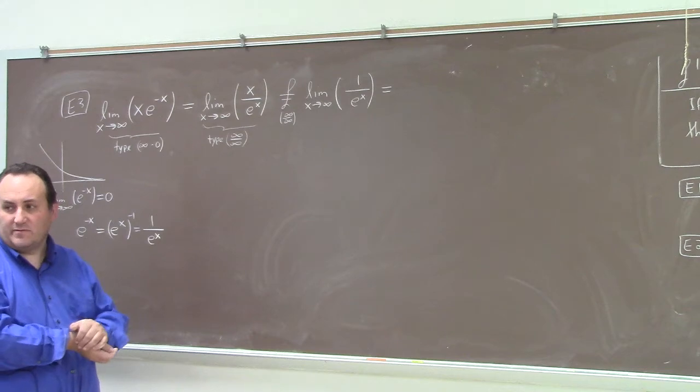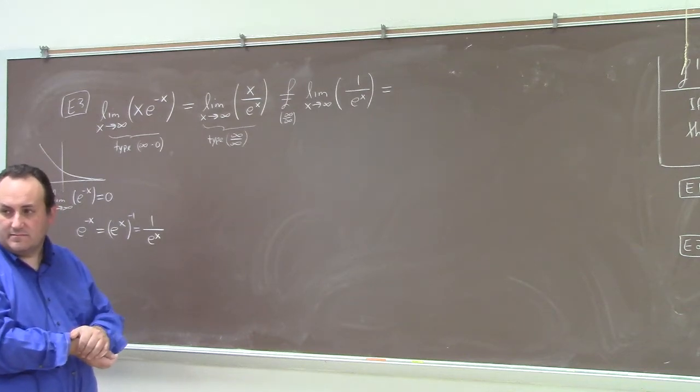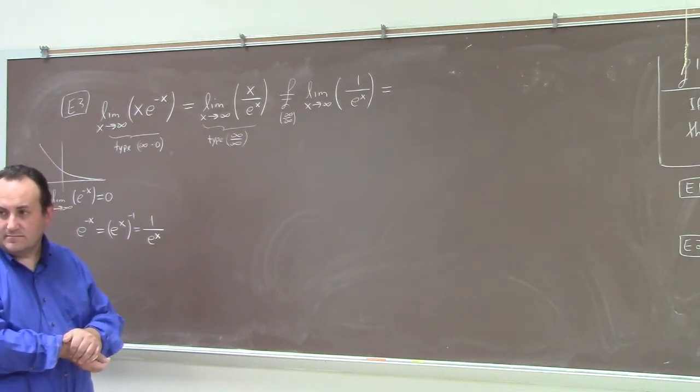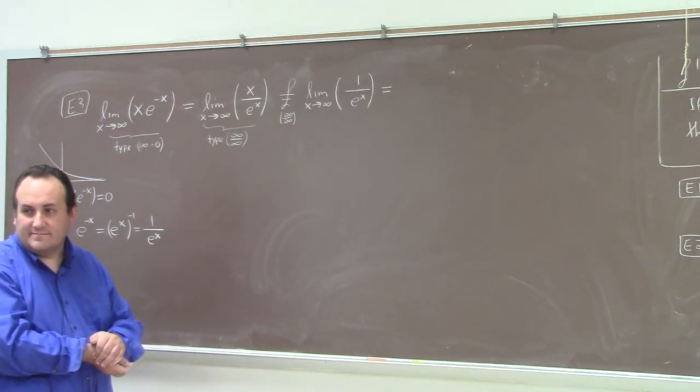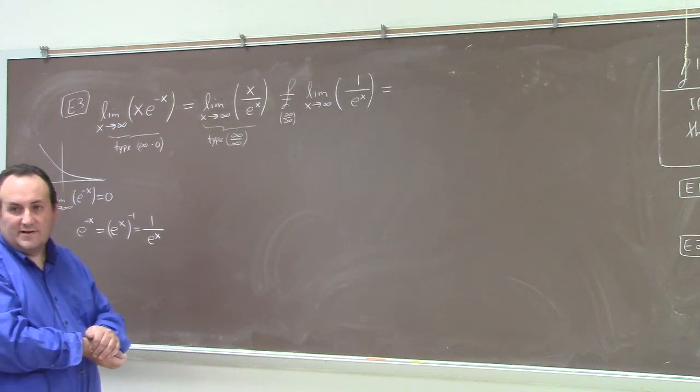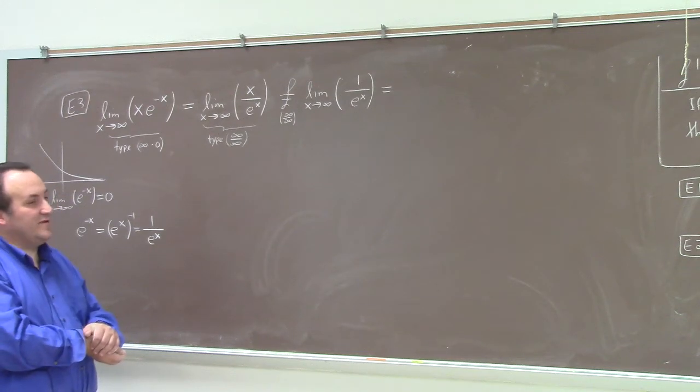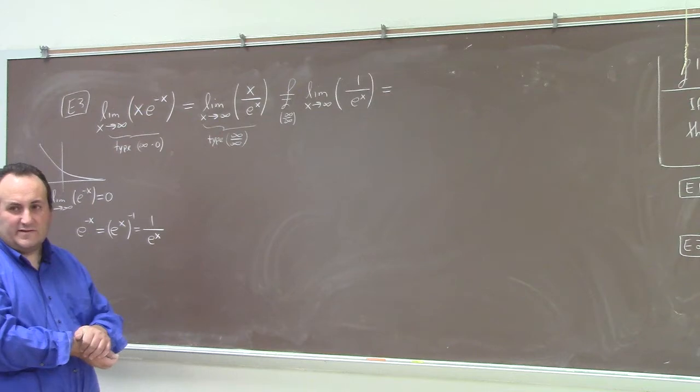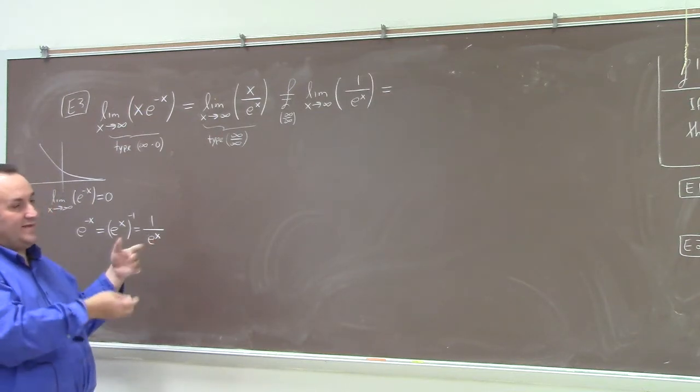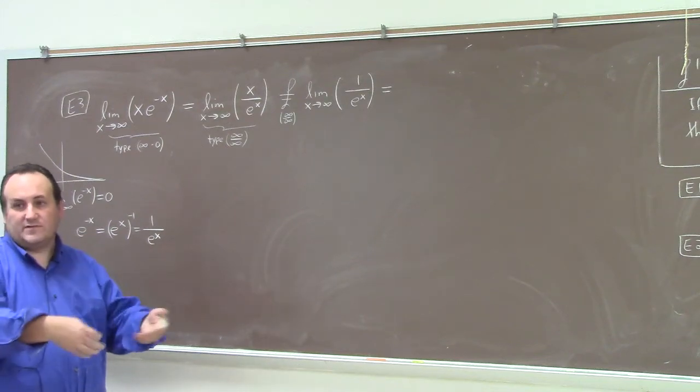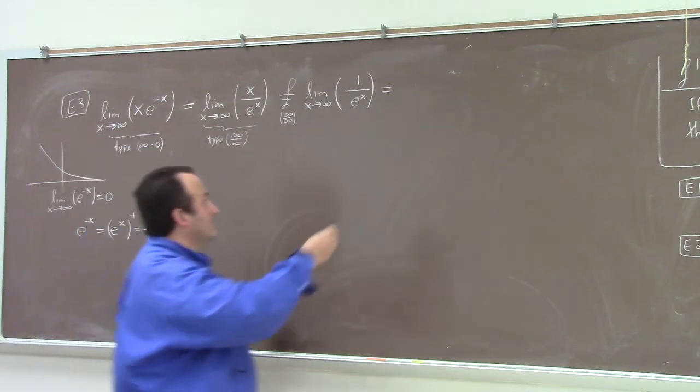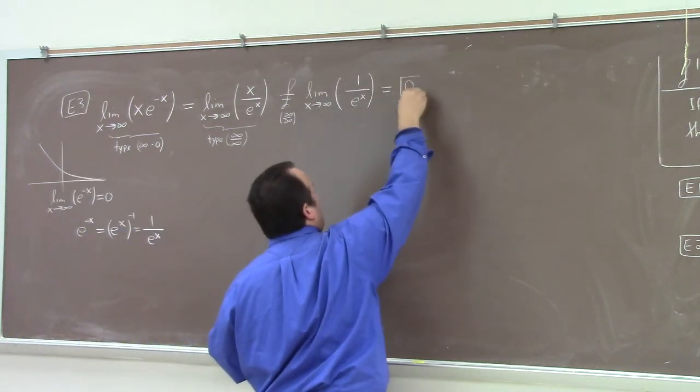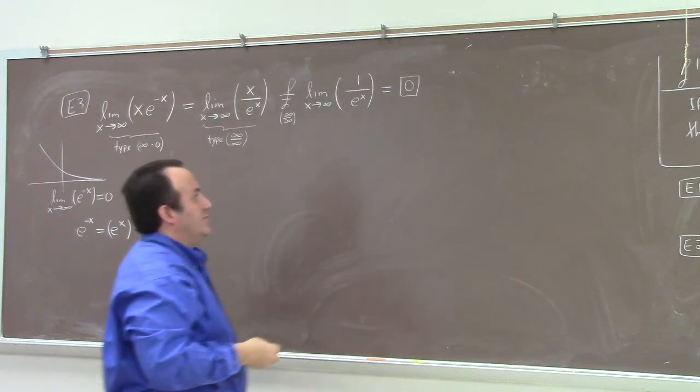Think about plugging in a very large number. What happens if you put 100 in? It's 1 over e to the 100, which is like a really, really small number. So, as you go further out, you can make that as small as you want. It gets closer and closer and closer to 0 as you go further and further out. The answer here is 0.